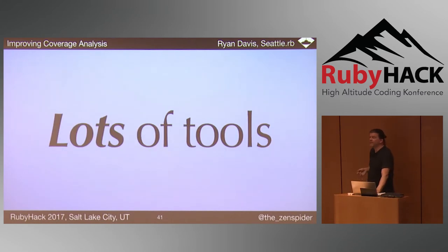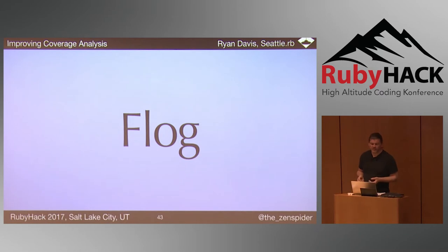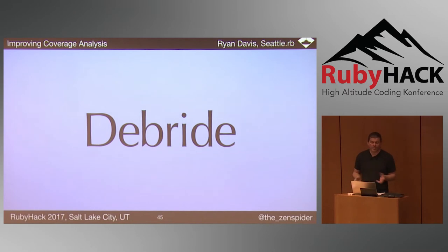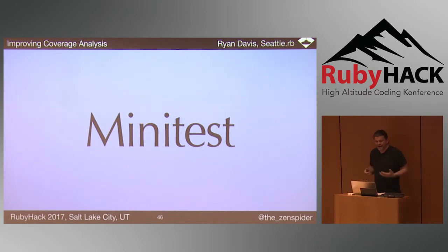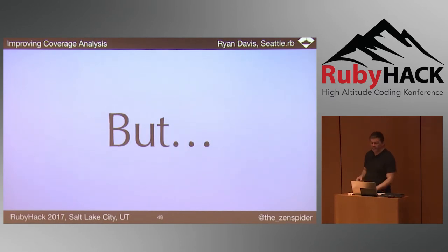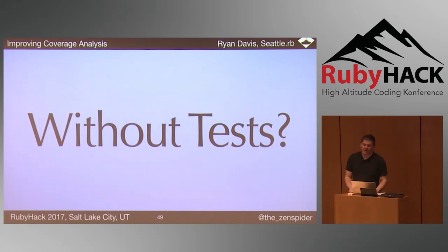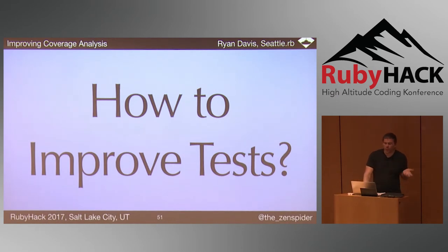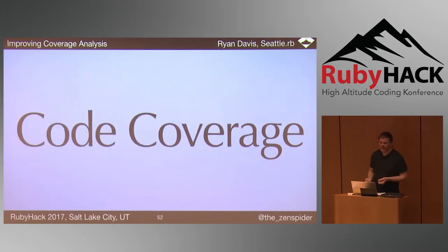Being a tool builder, I have loads of tools to help me. Flog points out where the complexity lies. Flay points out refactoring opportunities. Debreed points out whole methods that might not be used anymore and helps me delete entire fields of code. Minitest lets me write tests fast and clean with many extra plugins, including Minitest Bisect, which makes it easy to find and fix unstable tests. But what if there are no tests or too few tests? That's done with code coverage analysis.